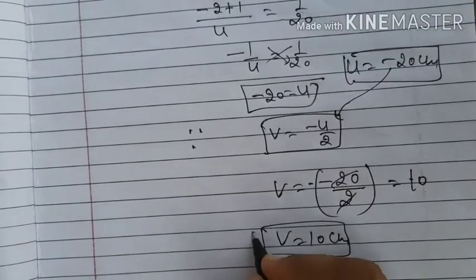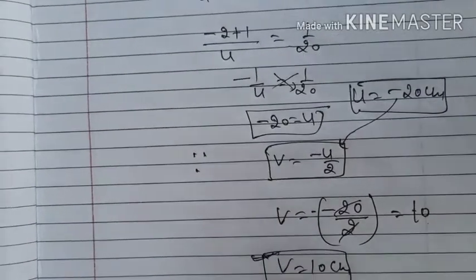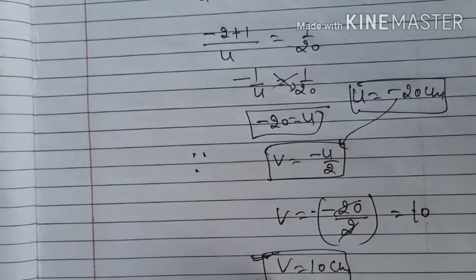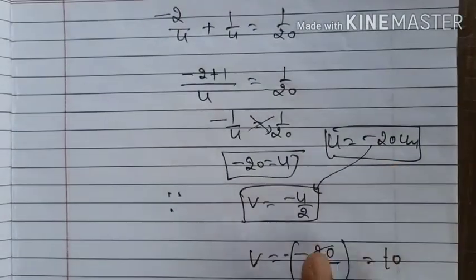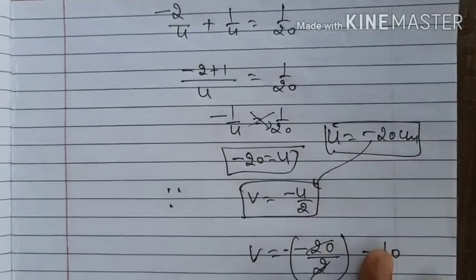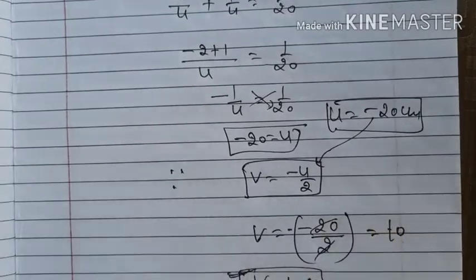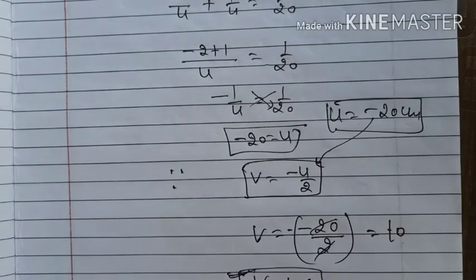Since v = −u/2, putting u = −20 cm: v = −(−20)/2 = 10 centimeters. So v = +10 cm (image is virtual, behind the mirror). These are our final values: u = −20 cm and v = +10 cm. I hope this is very helpful. Thanks a lot, have a nice day, take care.